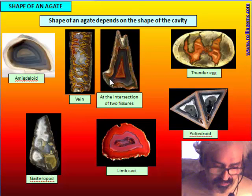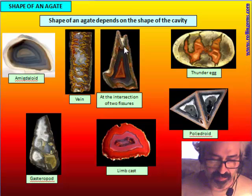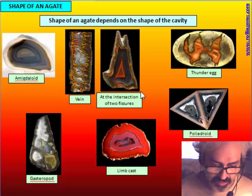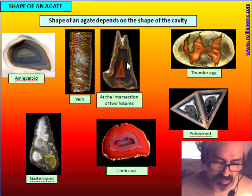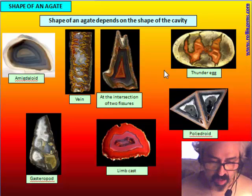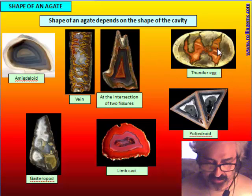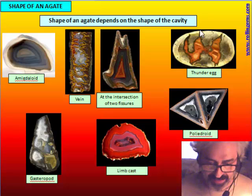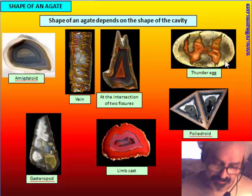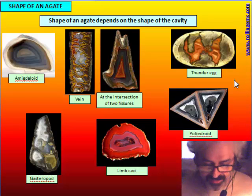It is also very common to find agate in veins, in fractures in rocks. In some cases where veins are abundant and cross each other, or in breccia with many intersections between fractures, you can find nodules with a more or less triangular shape. Another shape for an agate is the fissure inside the thunderegg — a typical star or butterfly shape, which is the filling of fractures inside the nodule.